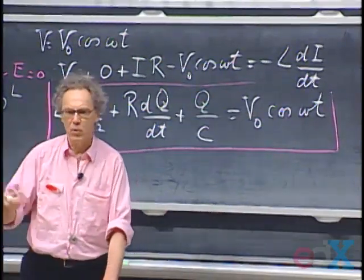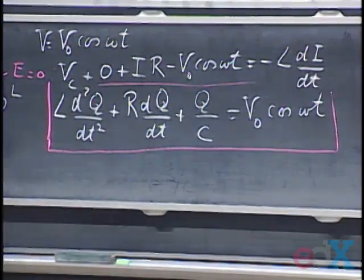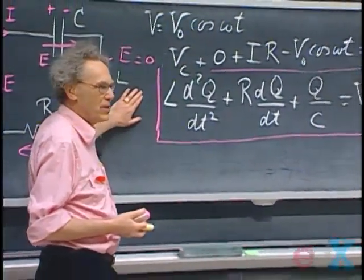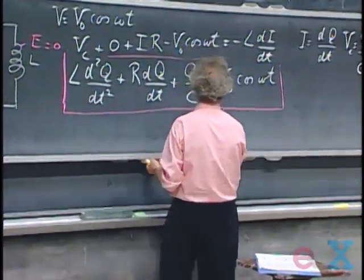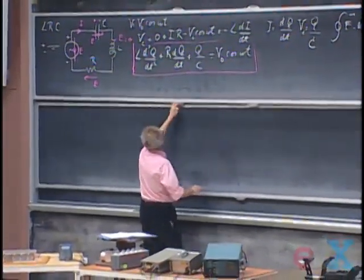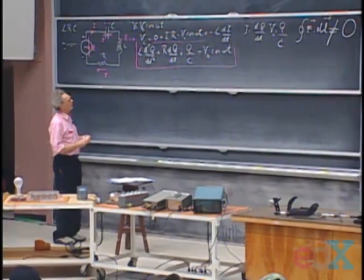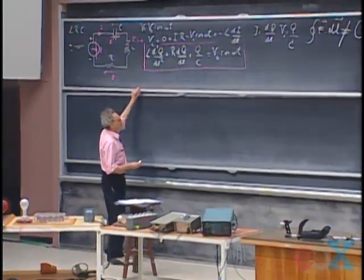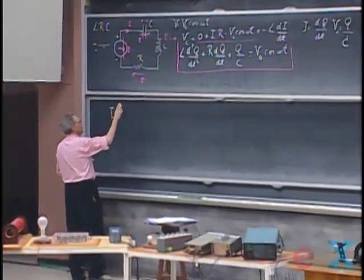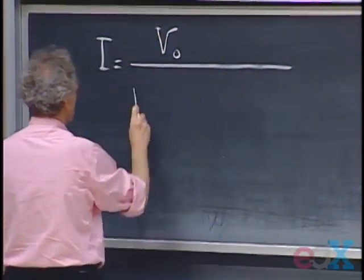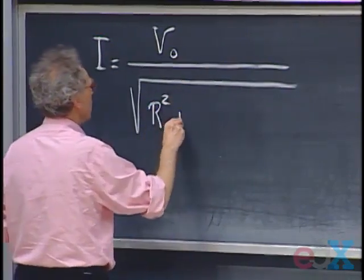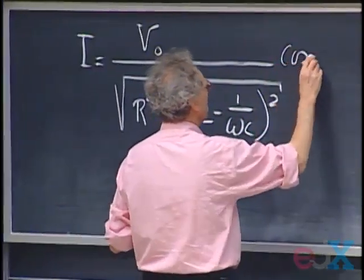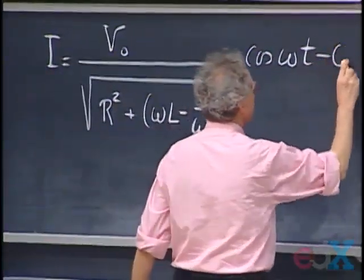Most books arrive at this equation in a completely wrong way, but they end up with it anyway. You'll have to solve this equation — it's a second-order differential equation, really part of 18.03 — so I will give you the solution. The current that satisfies the differential equation is I = V₀ / √(R² + (ωL − 1/ωC)²) · cosine(ωt − φ).